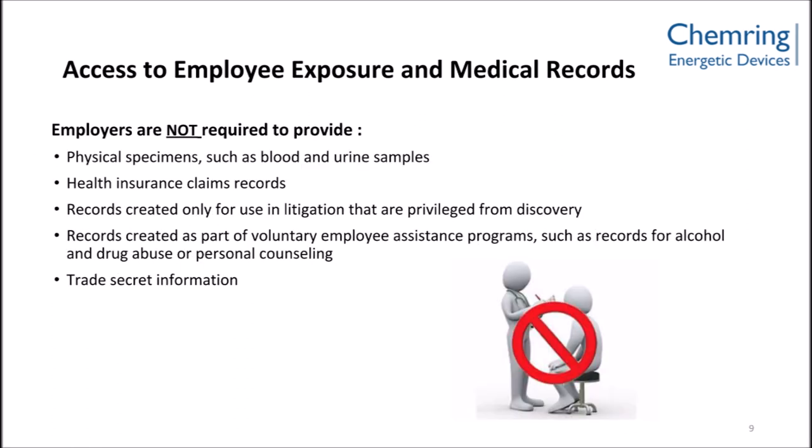Employers are not required to provide physical specimens such as blood and urine samples, health insurance claims or records, records created only for use in litigation that are privileged from discovery, records created as part of voluntary employee assistance programs such as records for alcohol and drug abuse or personal counseling, and trade secret information.